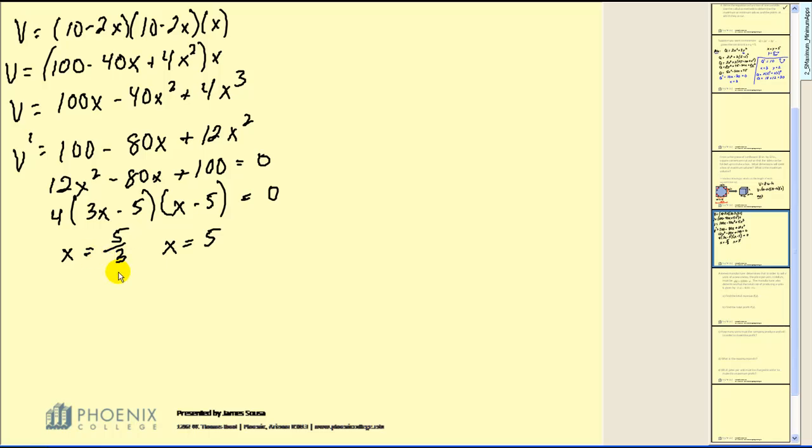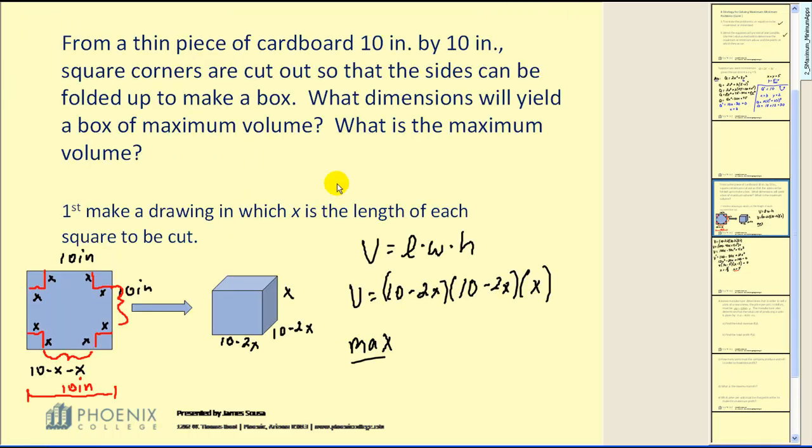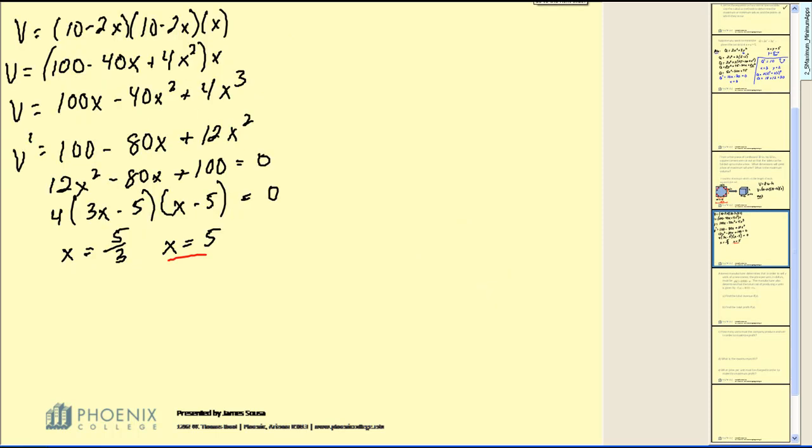These are the x values for which we may maximize or minimize the volume. Of course, we want to maximize it. Before we move on though, I'd like to take a look at the x value of 5. Let's go back to our drawing. If x was equal to 5, 10 minus 2x would actually be zero. Which doesn't make any sense. So 5 is actually not in the domain of this function. Therefore, we can exclude x equals 5. We need to consider x equals 5 thirds.